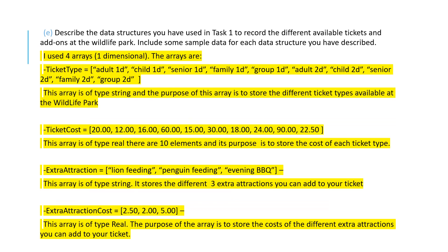A typical question: describe the data structures used in task 1 to record available tickets and add-ons, including data type and purpose. I used four one-dimensional arrays. Ticket type (string) stores the different ticket types available. Ticket cost = [20, 12, 16, ...] (real, 10 elements) stores the cost of each ticket type. Extra attraction = ['lion feeding', 'penguin feeding', 'evening barbecue'] (string) stores the three extra attractions. Extra attraction cost = [2.50, 2, 5] (real) stores the costs of the extra attractions.